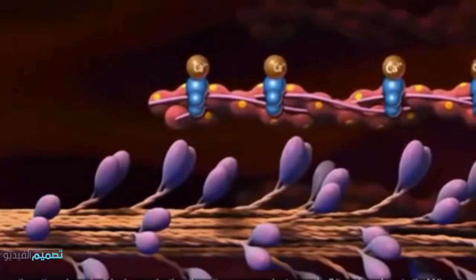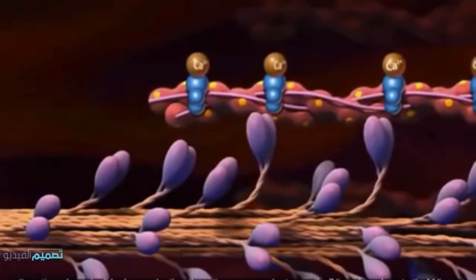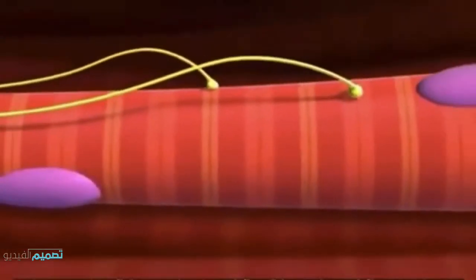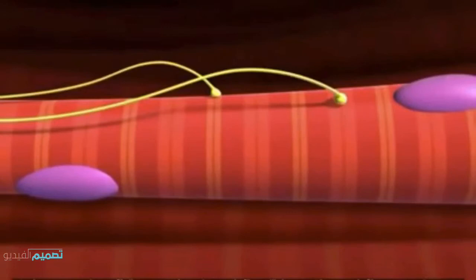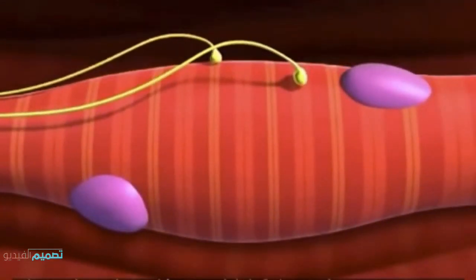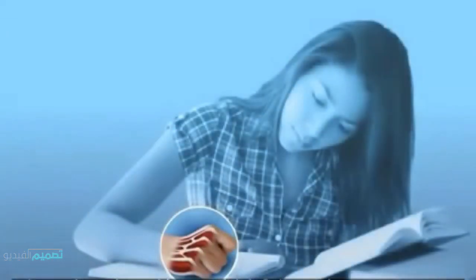As the actin and myosin slide along each other, the entire sarcomere shortens as the Z-lines draw closer to the M-line. As the sarcomeres in myofibrils contract, the entire muscle fiber will shorten. When muscle fibers contract in unison, a muscle can produce enough force to move the body, allowing you to take notes.